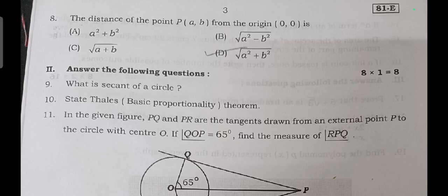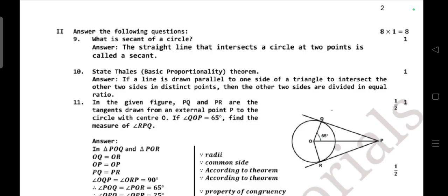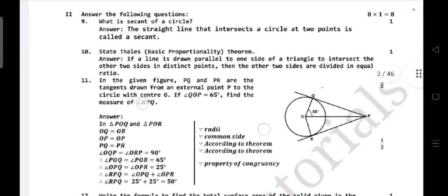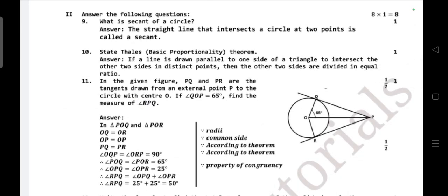Let's come to section two main: eight questions, each case one mark. What is secant of a circle? Answer: the secant of a circle is the straight line that intersects the circle at two points. It's called a secant. State Thales theorem or basic proportionality theorem statement, you have to write for one mark.